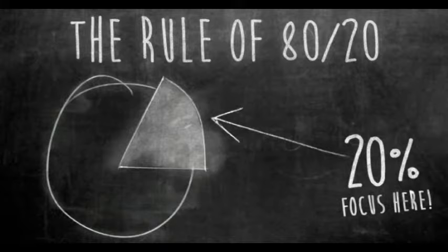He noticed that people in society seemed to divide naturally into what he called the vital few, or the top 20% in terms of money and influence, and the trivial many, or the bottom 80%.